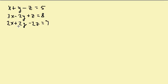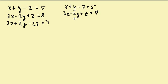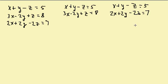Let's take a look at another one. I'm going to pair up the first and second, and the first and third. So I have x plus y minus z equals 5 and 3x minus 2y plus z equals 8. And then x plus y minus z equals 5 and 2x plus 2y minus 2z equals 7.